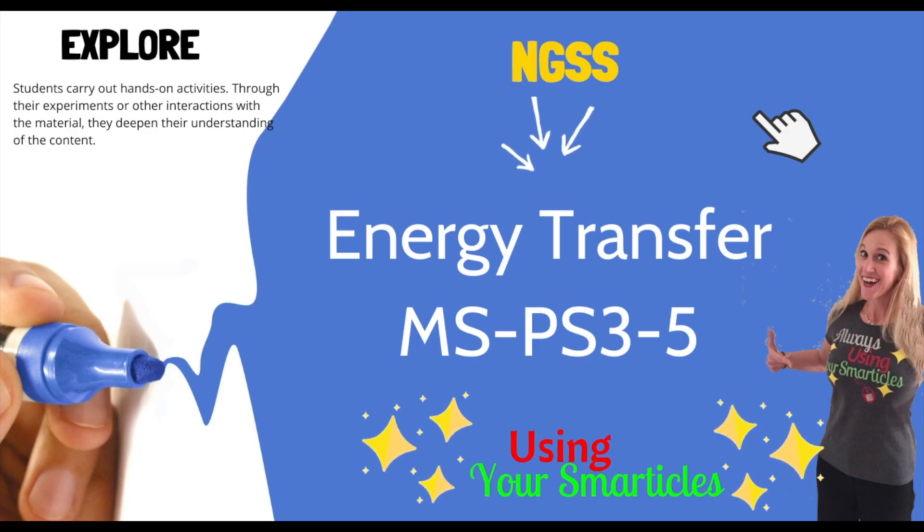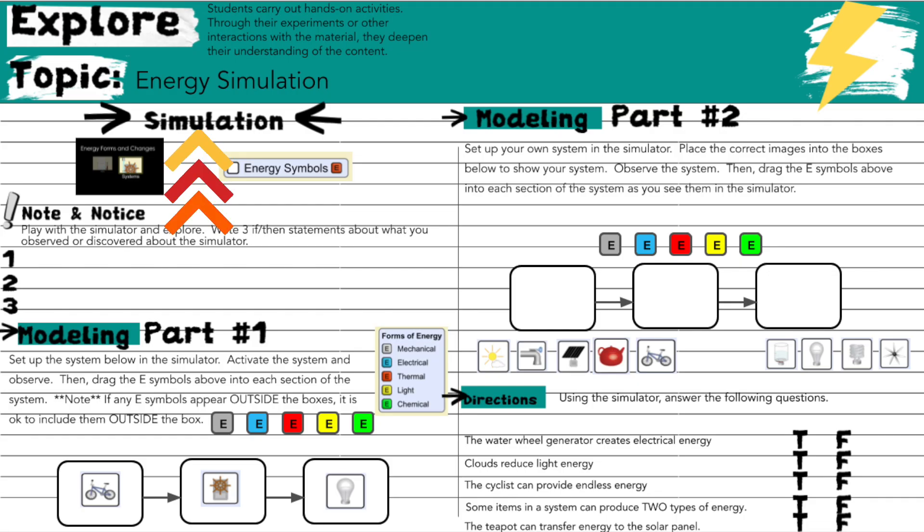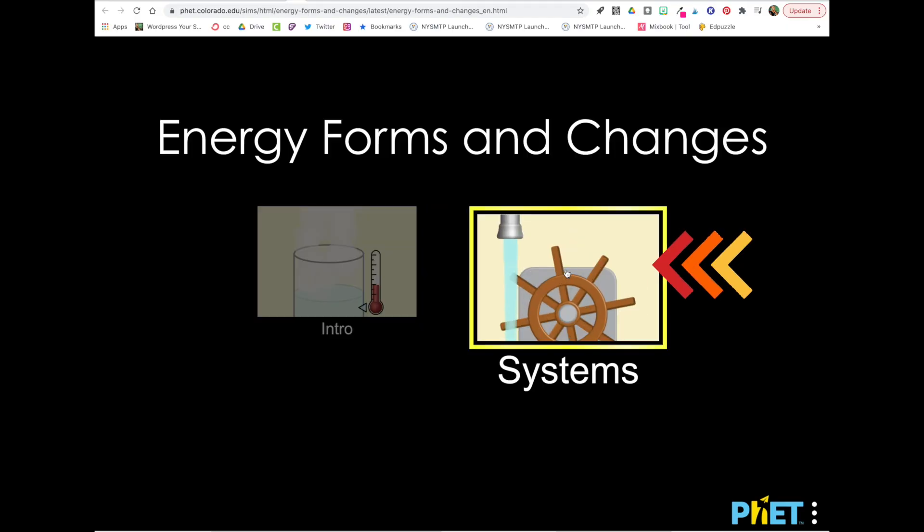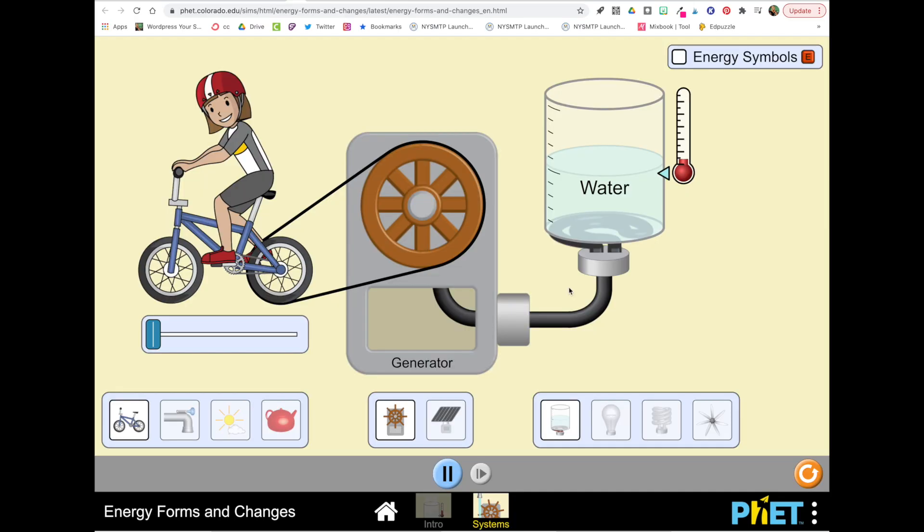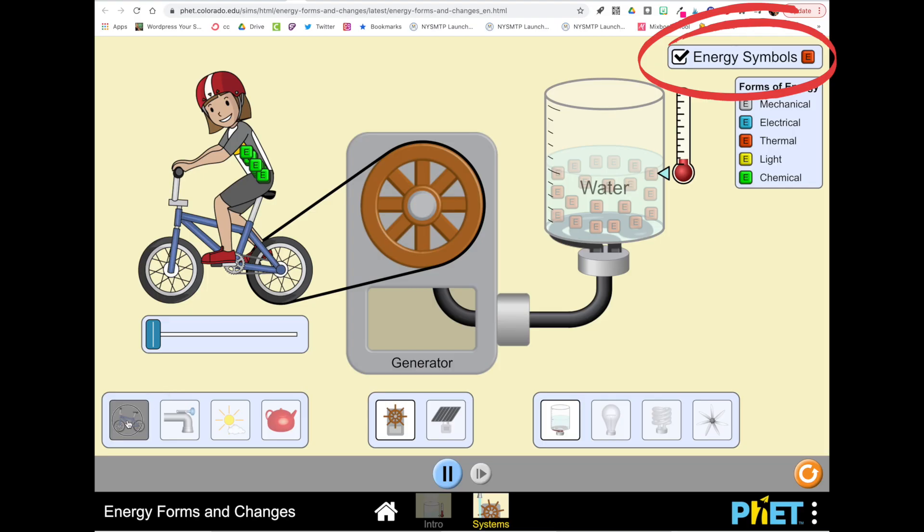Here on your notebook page you'll see a link for the simulation. To get started, just click on that link and then you're going to see two choices: intro or systems. Go ahead and click on systems to get the sim set up. The last thing you need to do is make sure you have the check mark next to energy symbols.